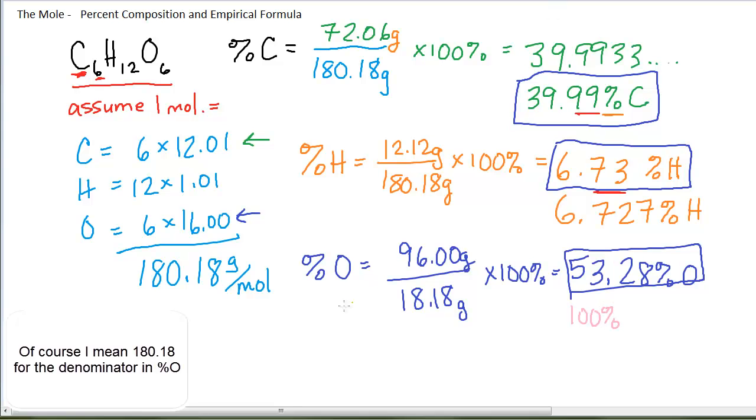This leads me to a point based on the way this works. An alternative way of calculating percent oxygen, once you get down to the last element being calculated, is you can simply take 100 percent minus the percentages of the other elements in the compound. If I take 100 percent minus the 39.99 that is carbon minus the 6.73 percent that is hydrogen, I indeed get the same percentage of oxygen.